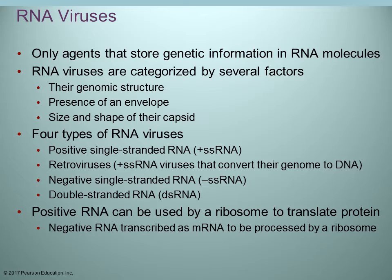How do we classify them? Number one, by the structure — are they single-stranded or double-stranded? Is there an envelope present or not? Is there a capsid? What is the shape and size? There are four different groups of RNA viruses: positive single-stranded RNA, retroviruses (which have positive single-stranded RNA but convert it to DNA during replication), negative single-stranded RNA, and double-stranded RNA.